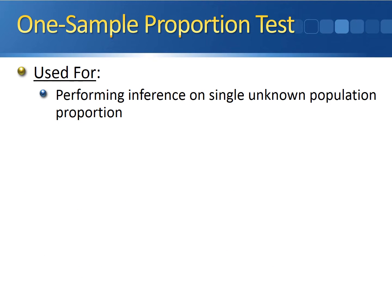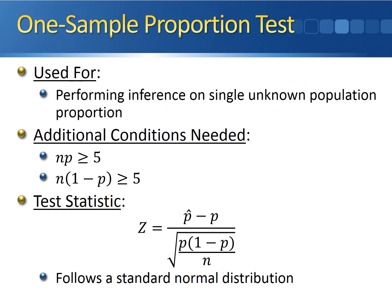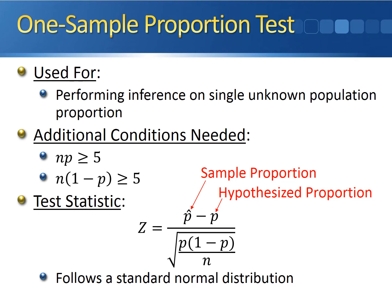The one-sample proportion test is a hypothesis test used to perform inference on a single unknown population proportion. We have two important conditions that need to be satisfied: first, n times P must be greater than or equal to 5, where n is the sample size and P is the hypothesized proportion; second, n times 1 minus P must also be greater than or equal to 5. If both conditions hold, the test statistic follows a standard normal distribution and is calculated as P-hat minus P, divided by the square root of P times (1 minus P) divided by n. Note that in the denominator, both P's are the hypothesized proportion — the sample proportion only appears once, in the numerator.